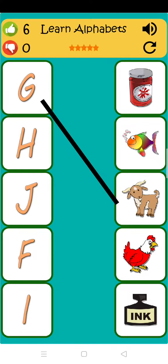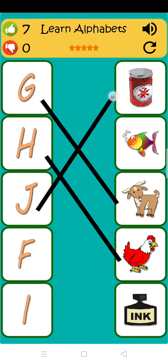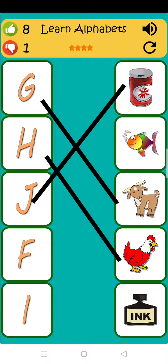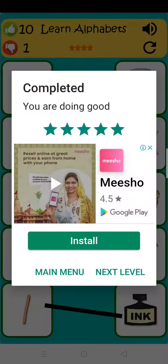G is for goat. H is for hen. J is for jam. F is for fish. I is for ink.